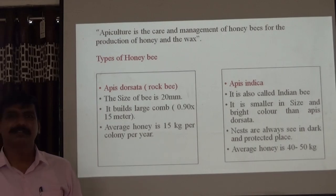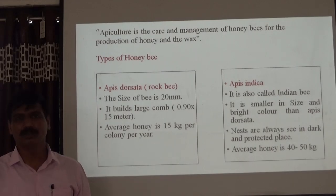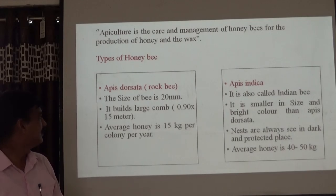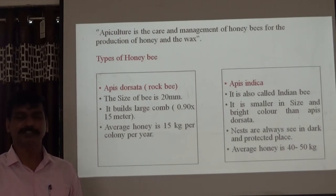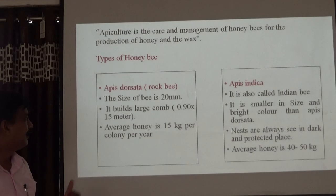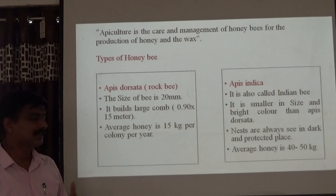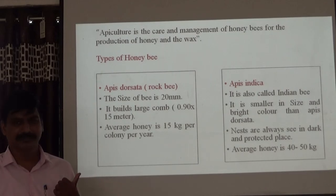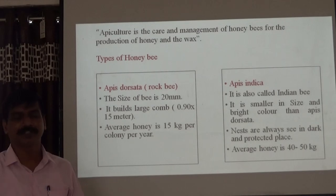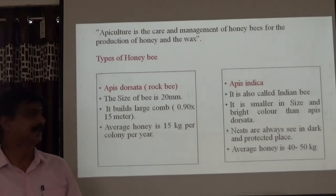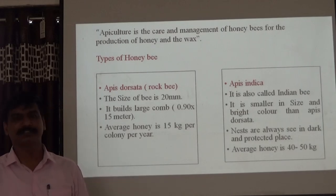First, Apis dorsata — these are found on rocky surfaces. The size of the bee is 20 mm and the comb size they build is 0.19 to 1.5 meters. According to the species, they build different sizes of comb. The average honey produced is 50 kg per colony per year. According to different species, production can increase or decrease.